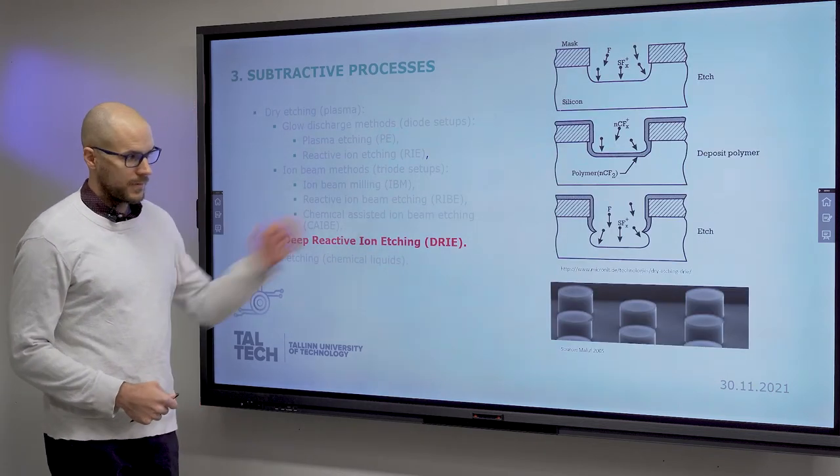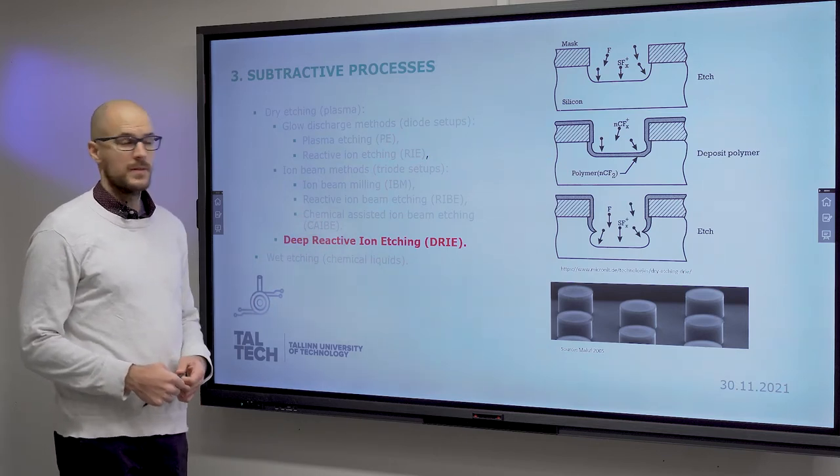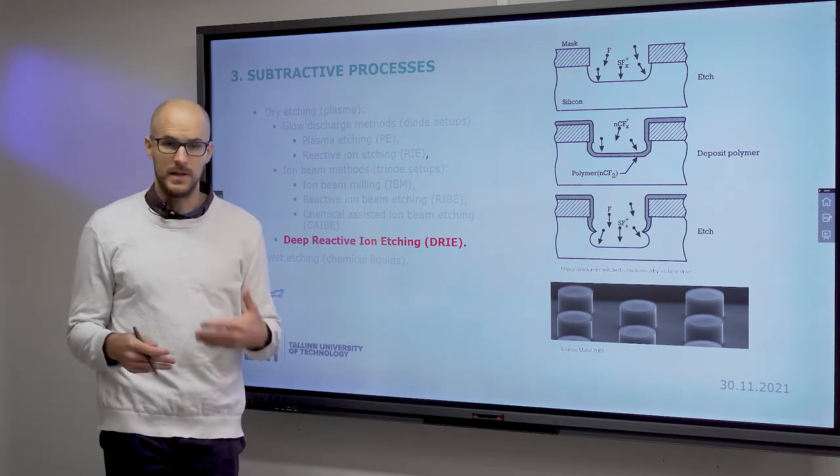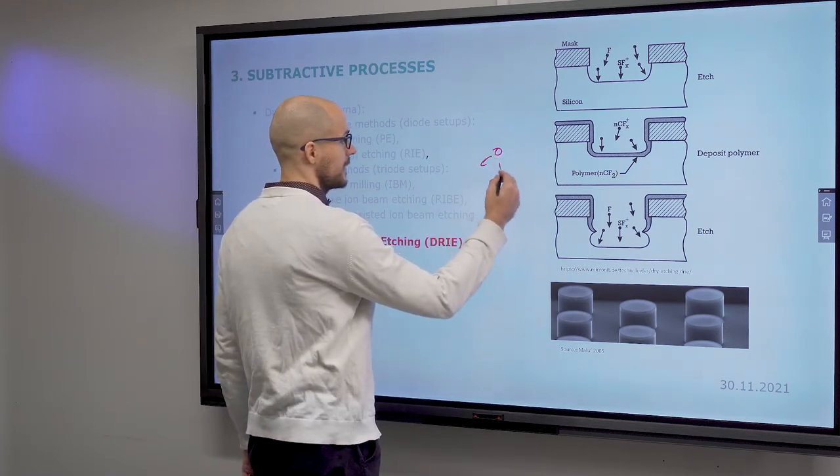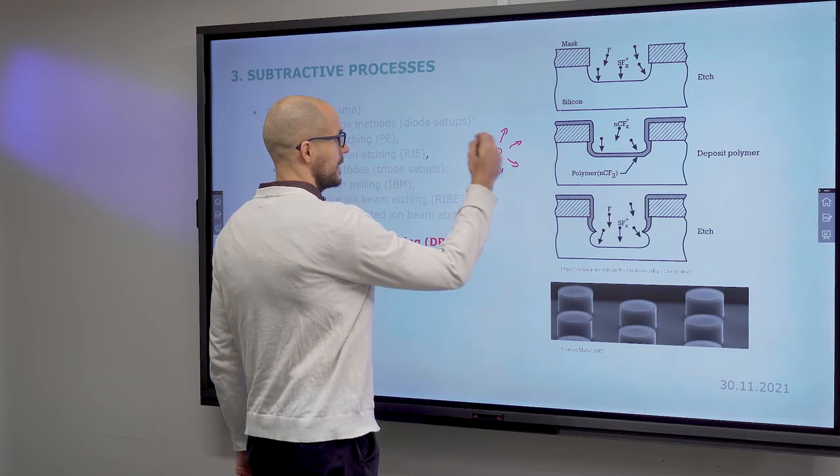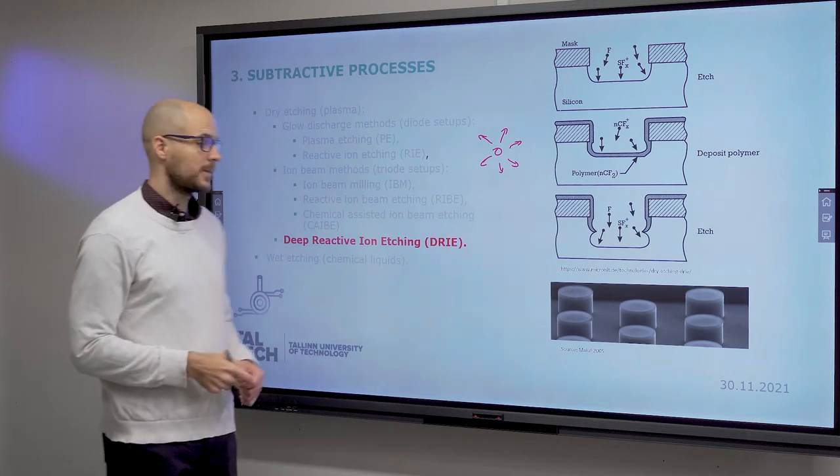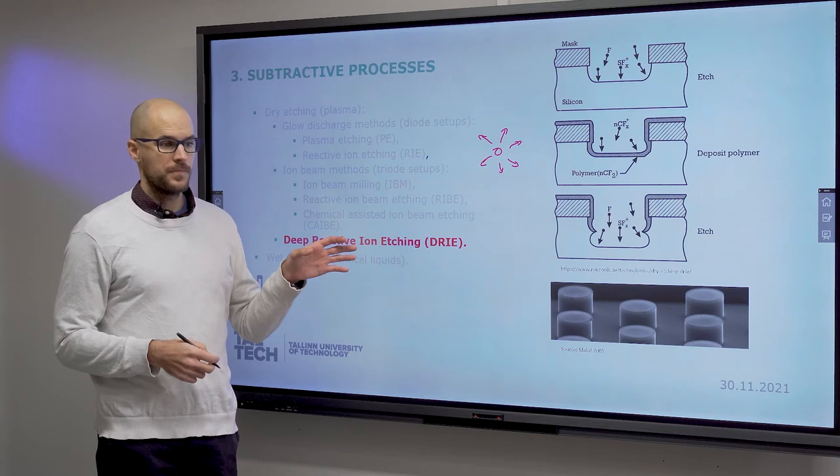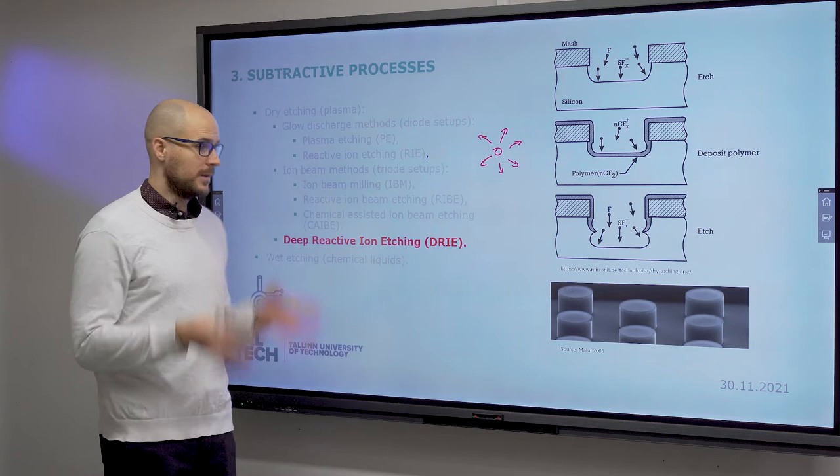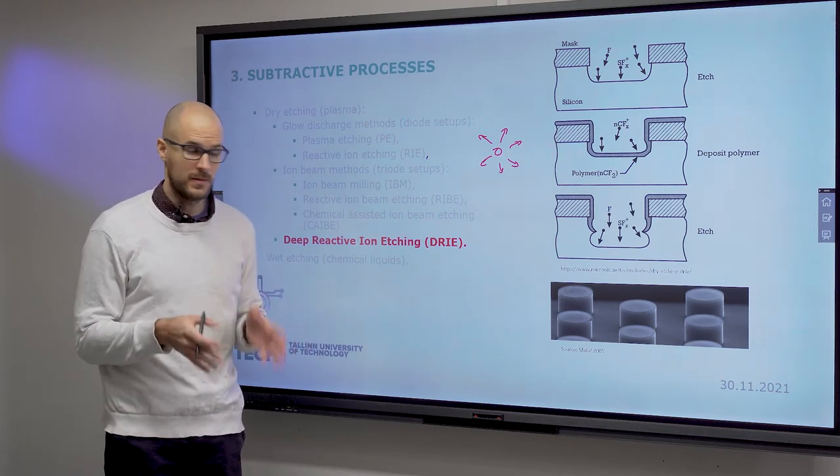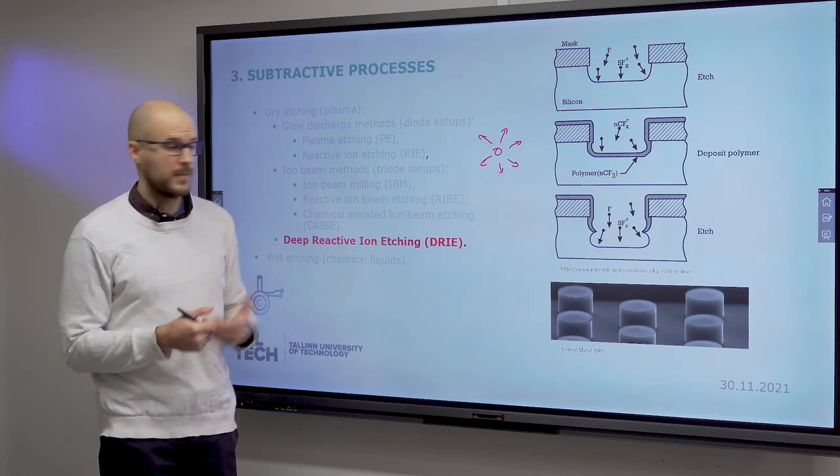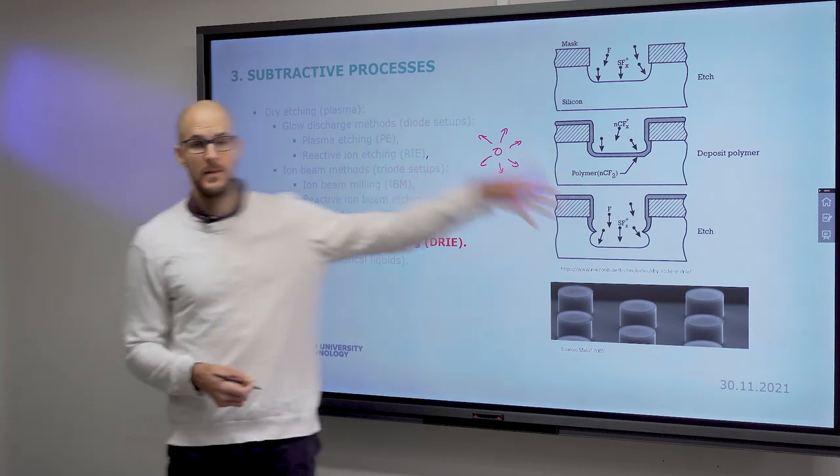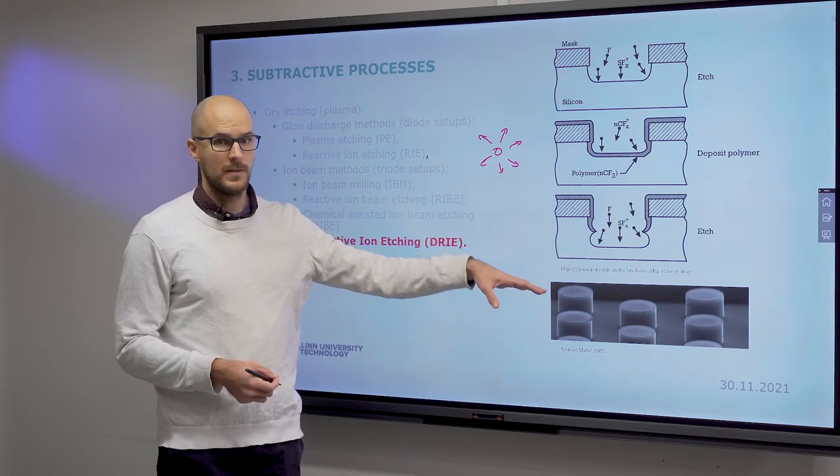Deep reactive ion etching is really important to make high quality, high aspect ratio microstructures. Normally, if you add the reactive chemical, it will etch in every direction uniformly. Isotropic etching means you etch at the same rate in every direction. It is affected by your crystal structure. Crystal orientations affect etching rates.